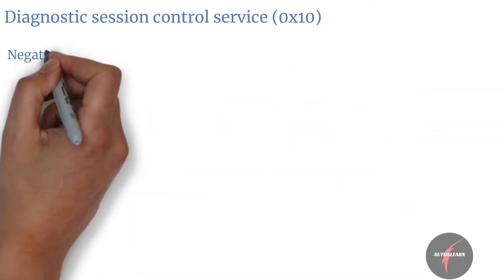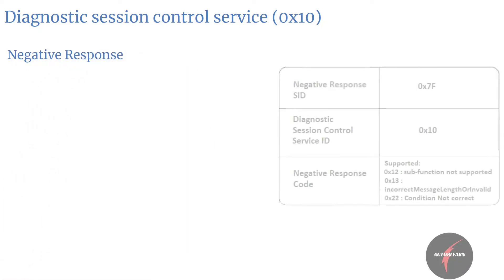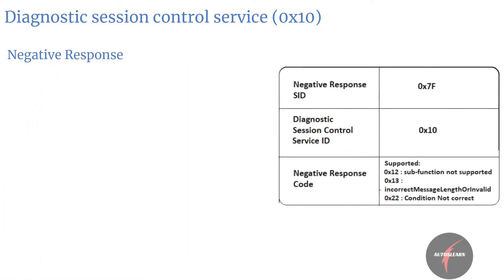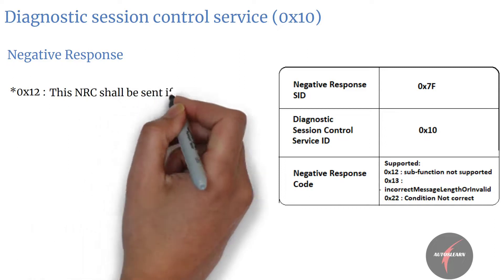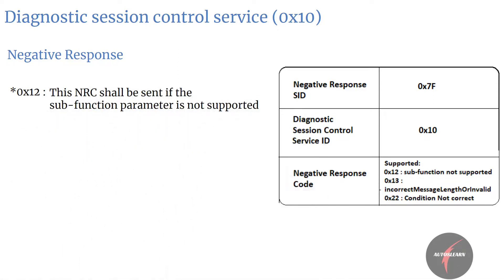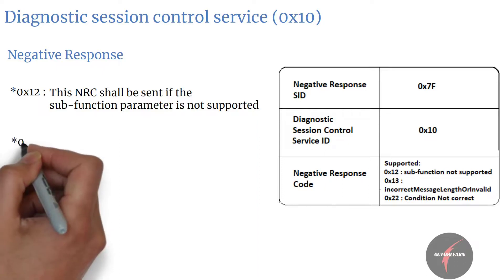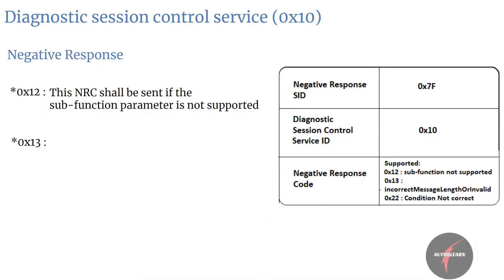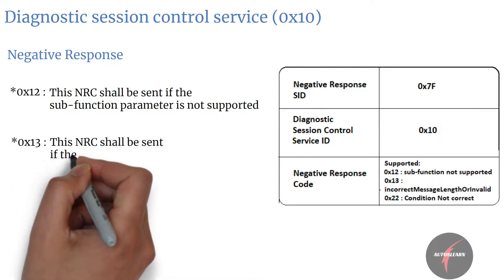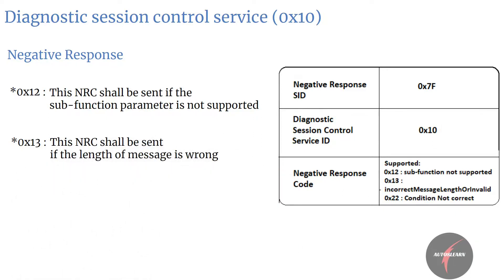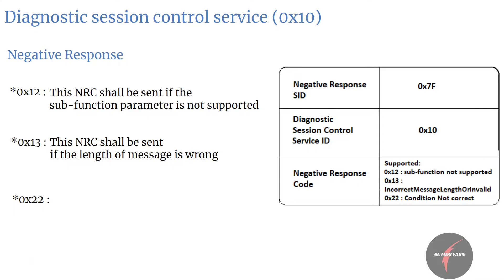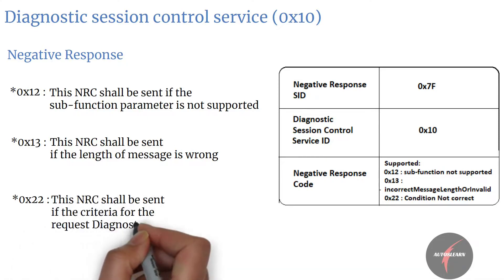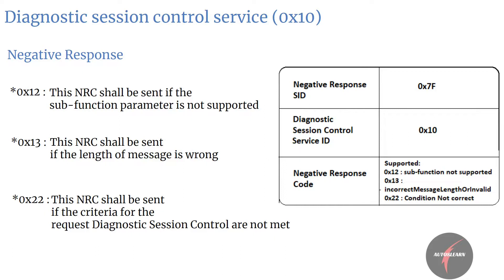Let's now look into the negative response. Some typical negative responses for Diagnostic Session Control are: value 0x12 — sub-function not supported, sent if the sub-function parameter is not supported; value 0x13 — incorrect message length or invalid format, sent if the length of the message is wrong; and value 0x22 — conditions not correct, sent if the criteria for the requested diagnostic session control are not met.